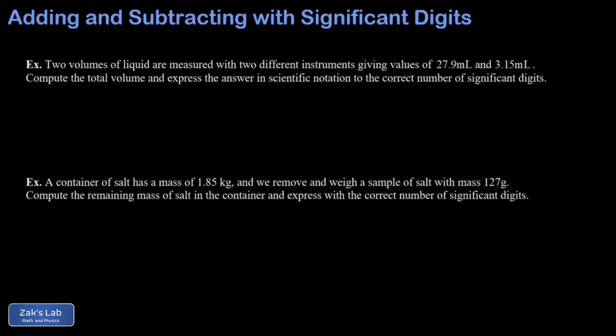In this video, we're going to review how to add and subtract numbers correctly when we're paying attention to significant digits. So the rule for adding and subtracting is that we round to the crudest precision of any of the participants in the problem. And I'll explain what I mean by working a couple examples.